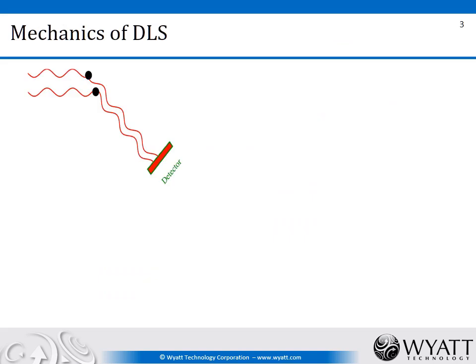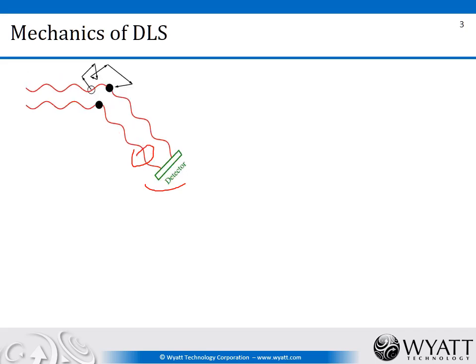In dynamic light scattering, we illuminate a solution of particles with a laser beam. As the beam hits the various particles, some of it will be scattered in all directions. We place a detector at a particular angle with respect to the laser beam. The waves scattered off each of the particles arrive at the detector. Sometimes they arrive in phase, producing constructive interference and higher light intensity. But as they move under Brownian motion, sometimes they arrive out of phase, causing destructive interference and a reduction in light.